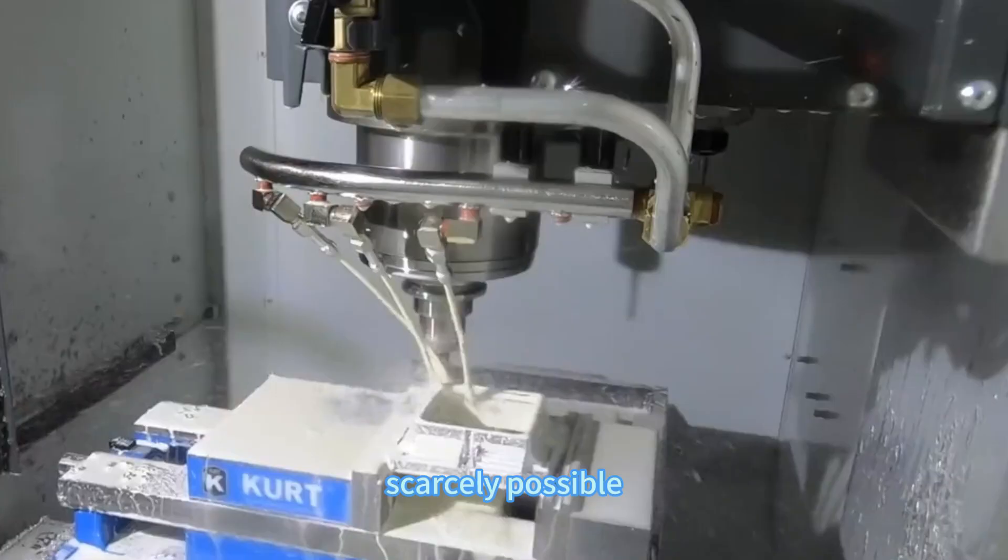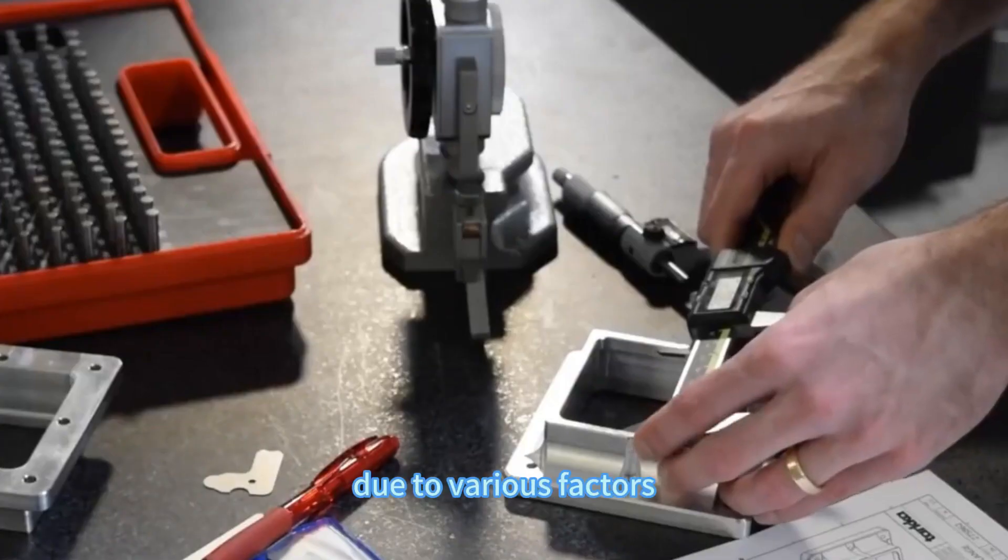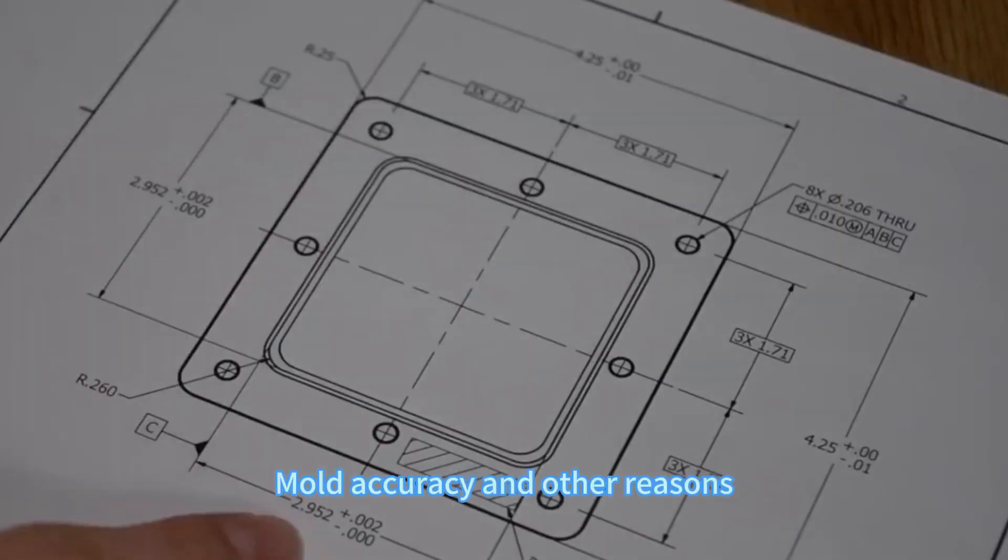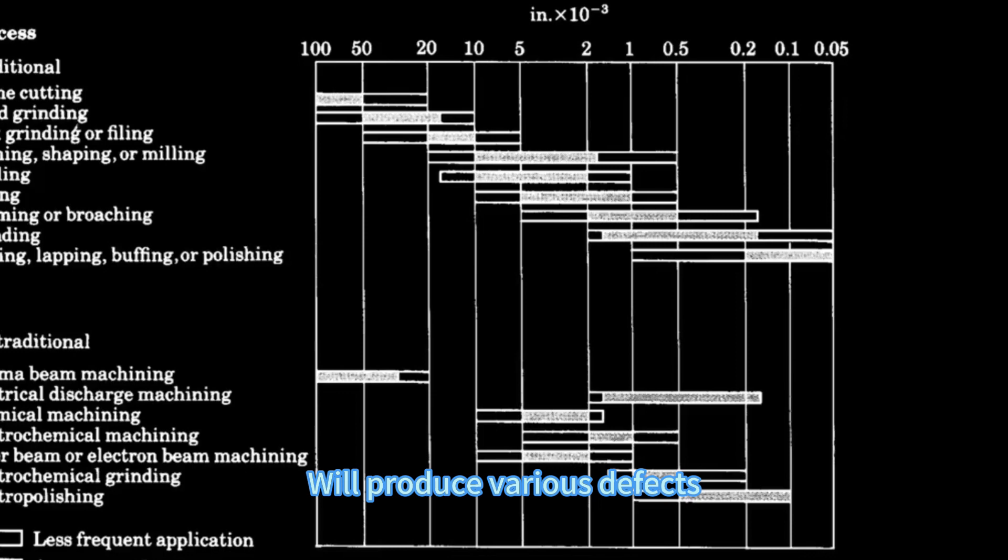Rapid mass production of mechanical products to achieve exactly the same size as the design is scarcely possible. In reality, due to various factors like machine vibration, cleaning, model number, mold accuracy, and other reasons, various defects will be produced.